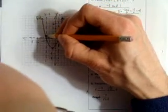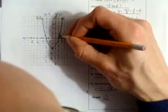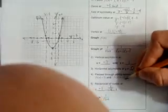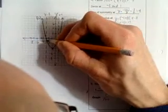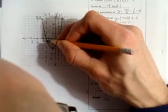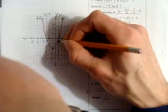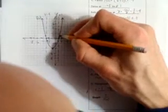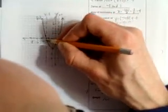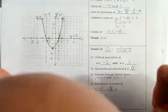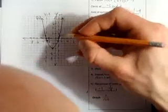My reciprocal function is going to pass through the original function wherever the original function was at a height of 1 and at a height of negative 1. So I put little marks at a y value of 1 and a y value of negative 1. The last thing is my reciprocal function needs to pass through the reciprocal vertex.